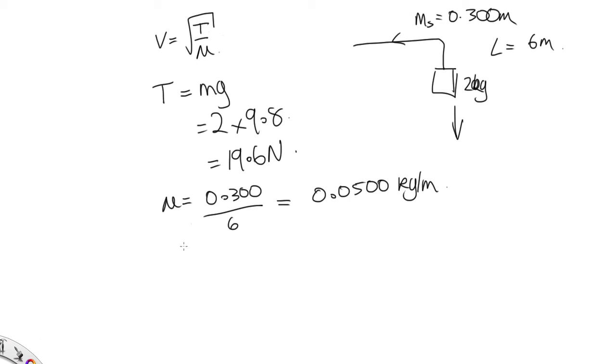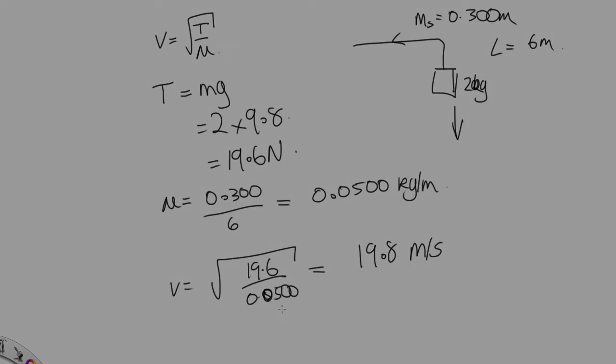So now all we need to do is substitute into this formula. We end up with v equals the square root of 19.6 over 0.0500. Solving that gives us 19.8 meters per second. So that is the speed of the wave along this string.